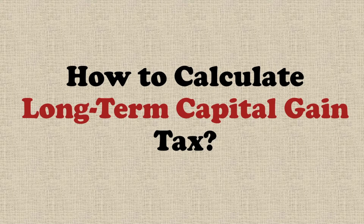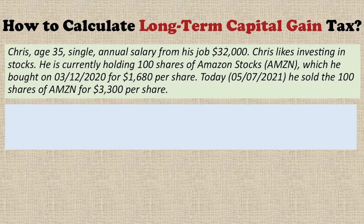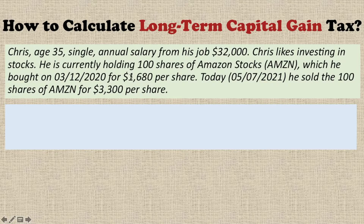In this video I'm going to talk about how to calculate the long-term capital gain tax. Here's an example: Chris, age 35, is a single filer whose annual salary from his job is $32,000. Chris likes investing in stocks and is currently holding 100 shares of Amazon stock.